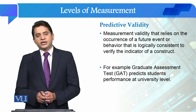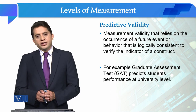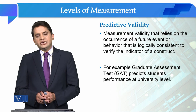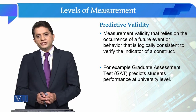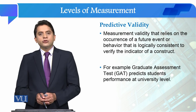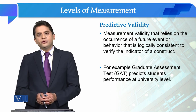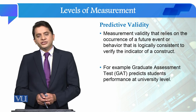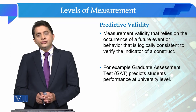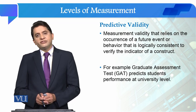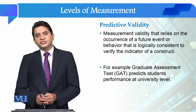For example, the GAT — Graduate Assessment Test. If you have a high GAT score, then you are assumed to be a good student for MPhil and PhD. If your score is average, you are assumed to not be a good student for MPhil and PhD studies. And if you do not have a GAT score, you are not considered for MPhil and PhD admission, because passing the test is a basic criteria.